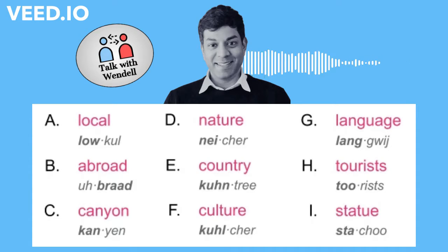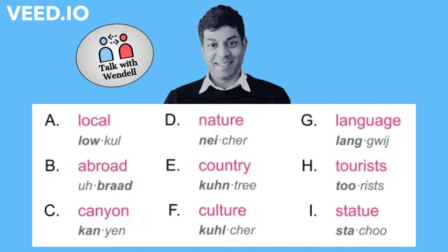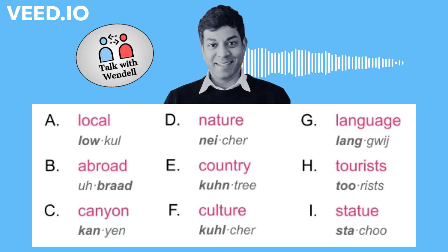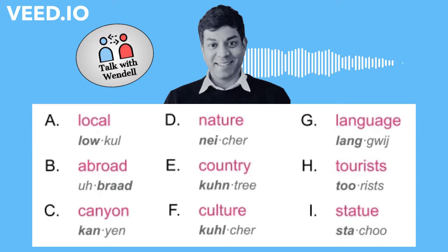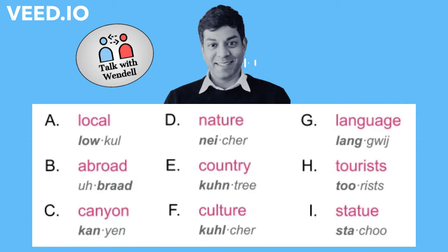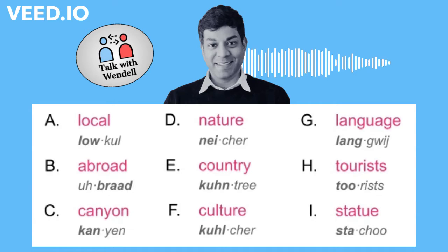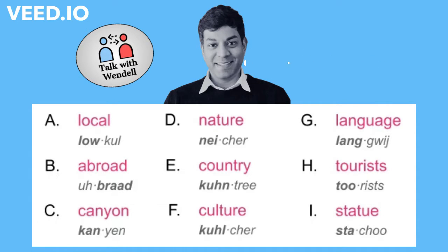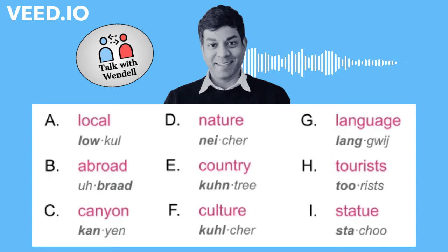Welcome to the travel lesson: two-syllable vocab. Letter A: local, local. Letter B: abroad, abroad.